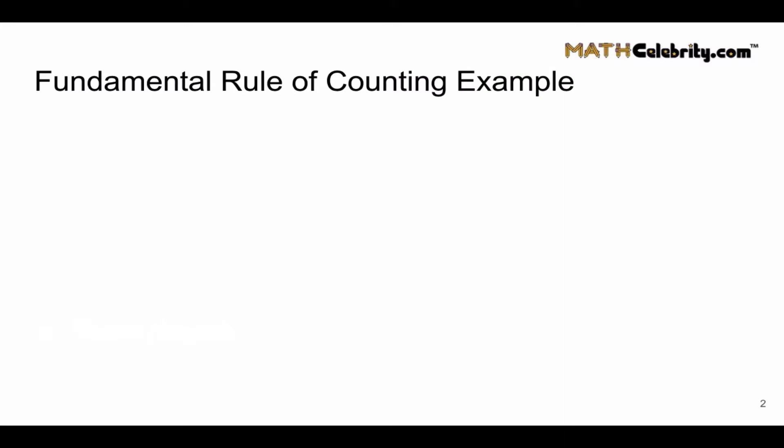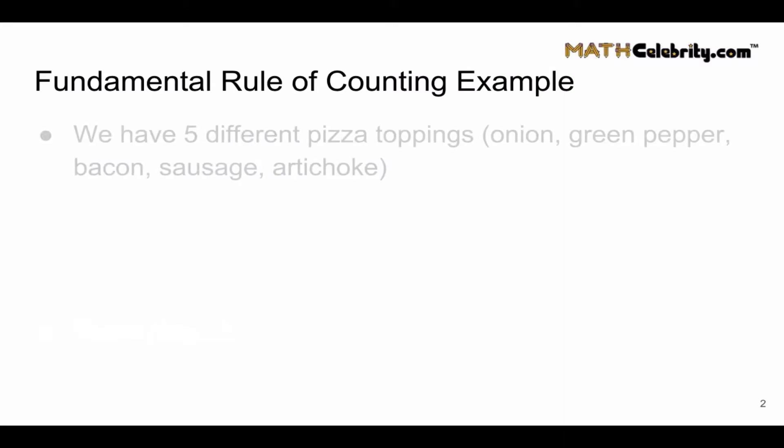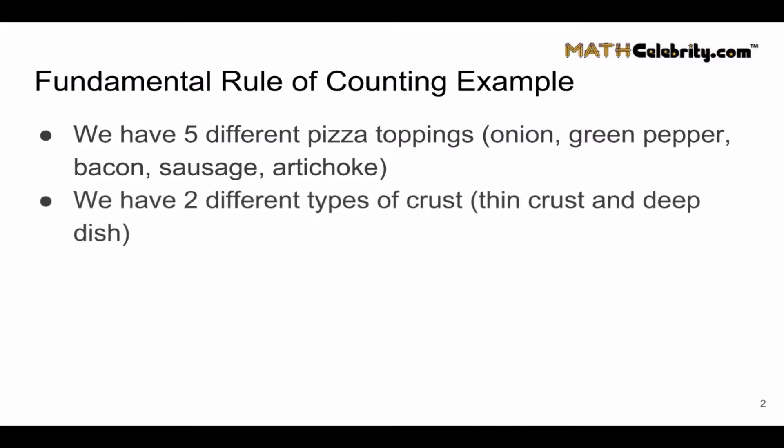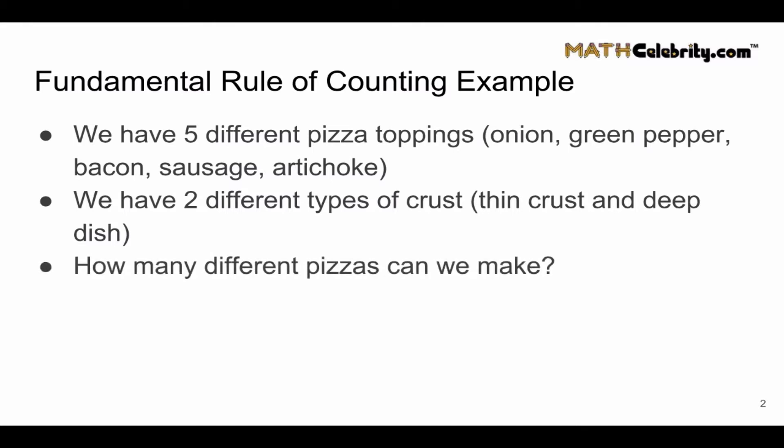Let's walk through an example. We've got five different pizza toppings available for a pizza: onion, green pepper, bacon, sausage, and artichoke. We also have two different types of crust you can order: thin crust and deep dish. The problem asks, how many different types of pizzas can we make?